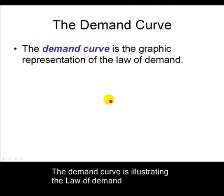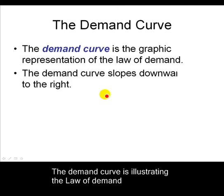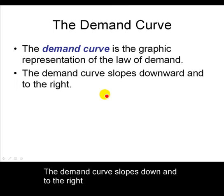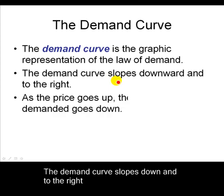The demand curve, which we're going to draw in a second, is basically a representation of this law of demand. The demand curve always slopes downward and to the right. This is showing prices going up and quantity demanded going down.